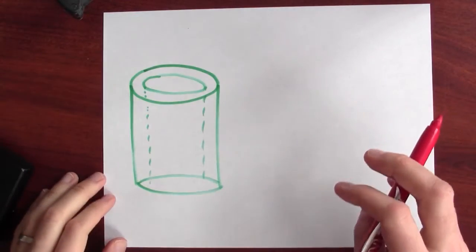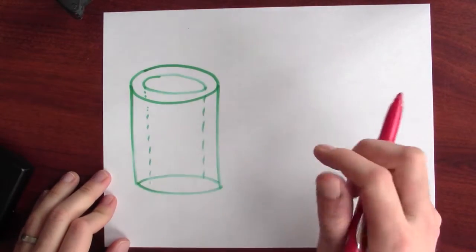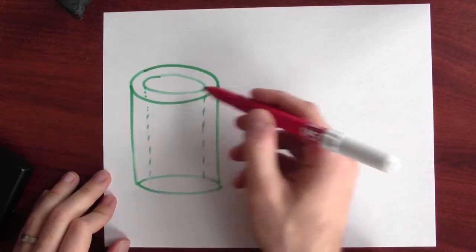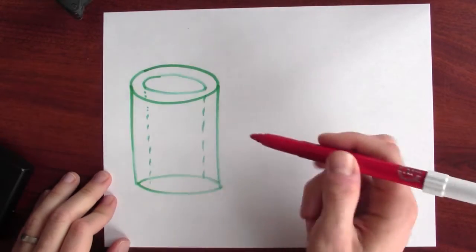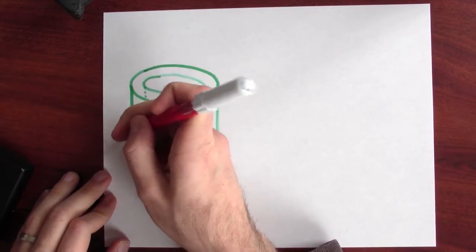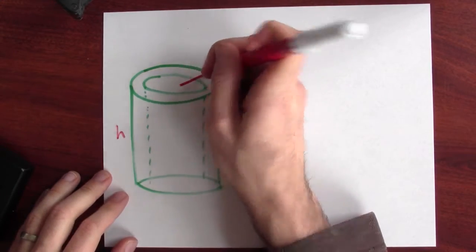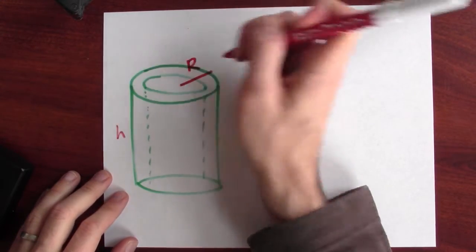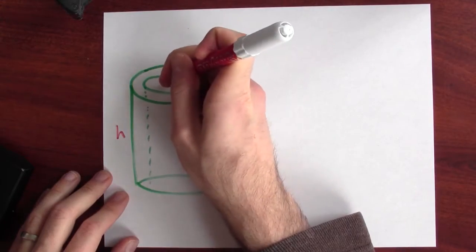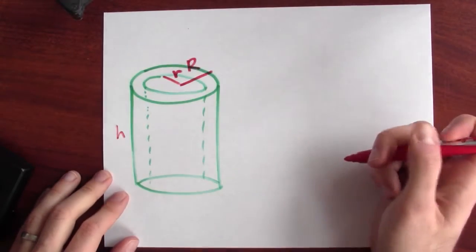We can say something a bit more precise. Well, here's a shell again. But instead of calling this dr, let's think of this as a big cylinder with a little cylinder drilled out. So both cylinders have the same height h. But let's say that the big cylinder has a radius big R, and the little cylinder has a radius little r.